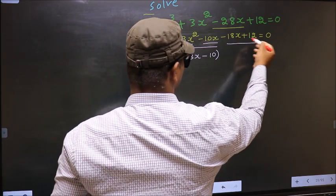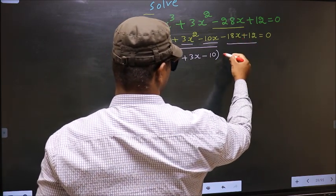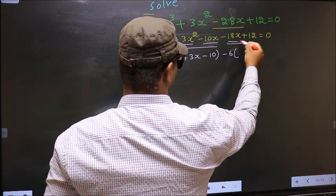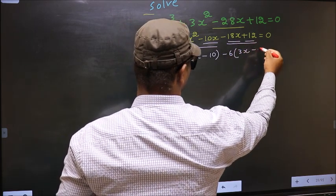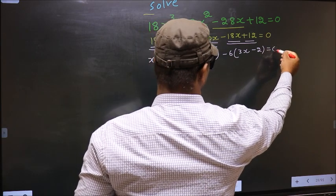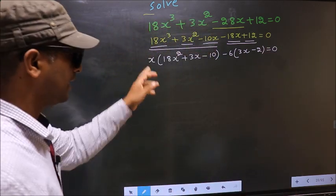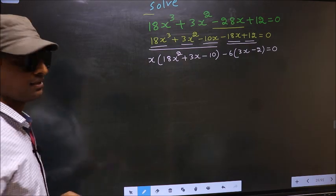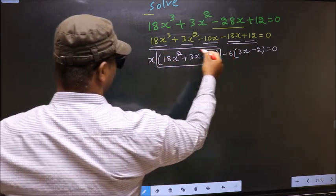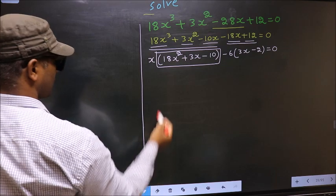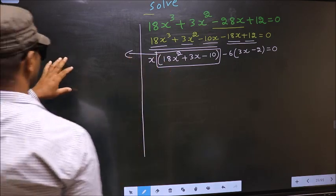From the last 2 terms, what can be taken out common is -6. So here you get -6(3x - 2) = 0. In this equation we have come across a quadratic, so I will factorize this quadratic.